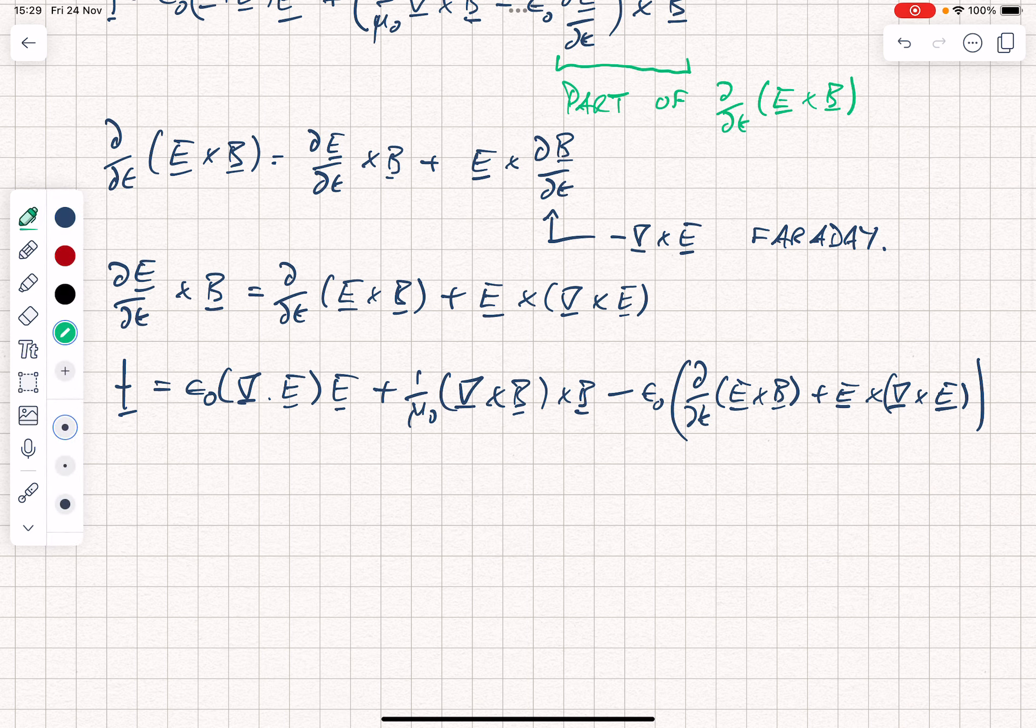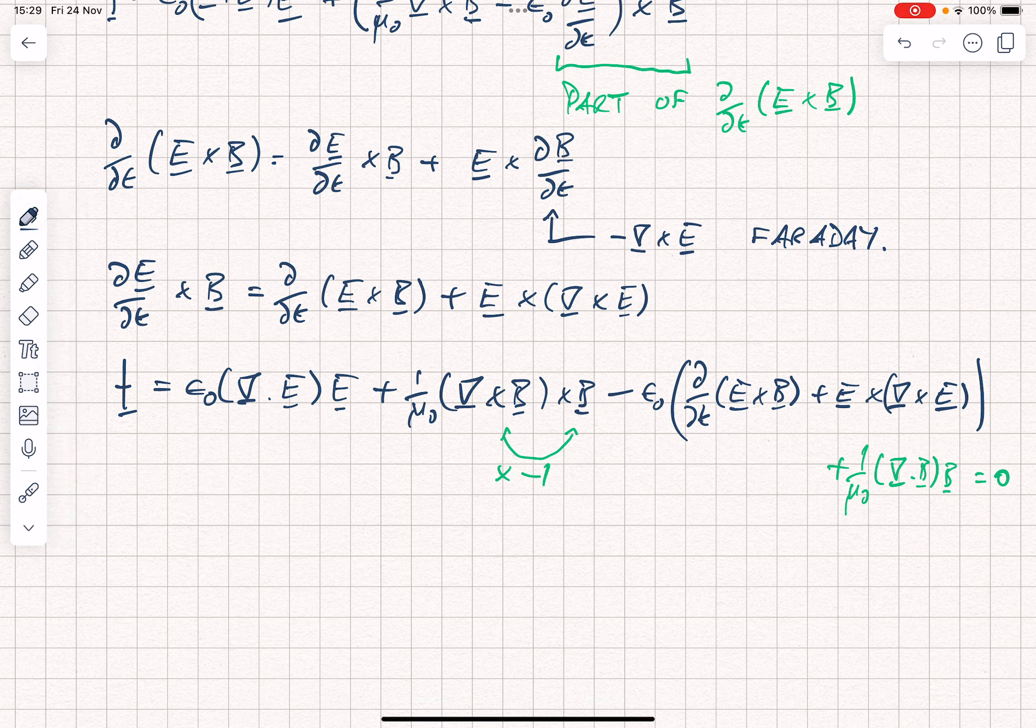We want to do a little bit further rearrangement, so we're going to rearrange this cross product to put it the other way around. Of course, at that point, we have to introduce a minus sign. So I'm going to write that as times minus 1. And we're also going to add on a term of 1 over mu naught div B times B. And we can add that because it's identically equal to 0. Well, if it's equal to 0, why are we adding it? We're adding it because it's going to be convenient and because it gives us symmetry with this term here at the beginning.